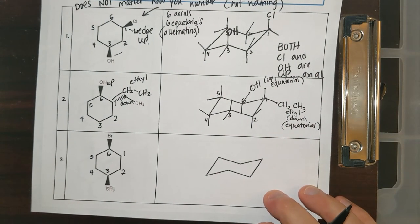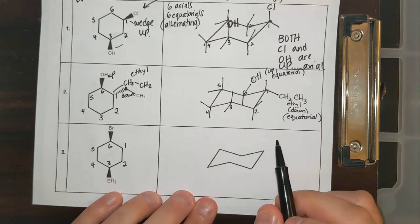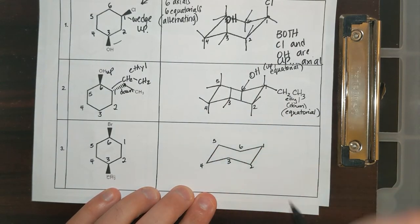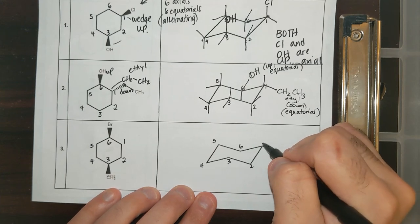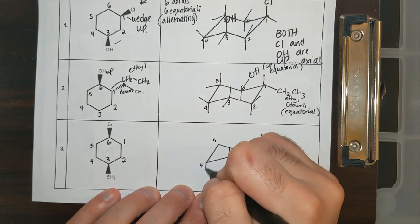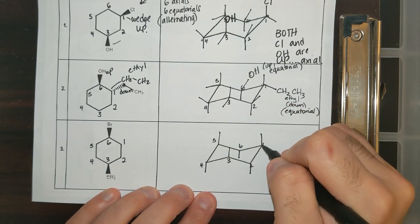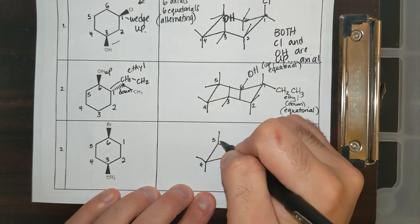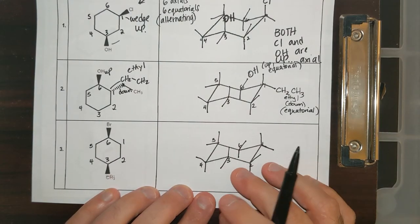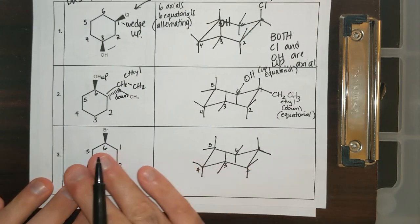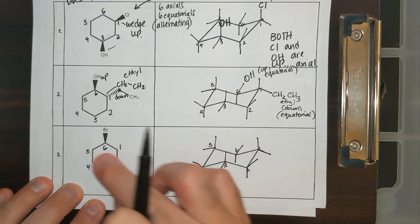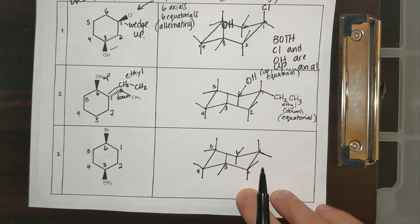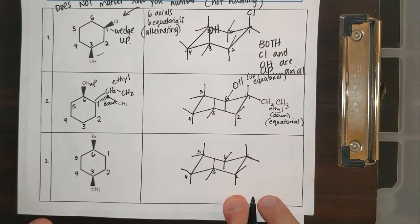I want you to do the rest of these on your own, but I'll help get you started on the next one. Number it one through six; draw alternating axials straight up and straight down, then alternating equatorials — equatorial down, equatorial up, equatorial down, equatorial up, equatorial down, equatorial up. Already numbered one through six on the ring. Now it's up to you to figure out what the wedges mean — are they going up or down, and are they going on an axial or equatorial? If you need any other help or support on this worksheet, please let me know.